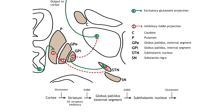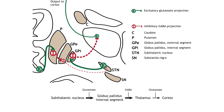The indirect pathway is activated by an increase in excitatory cortical input, activating the inhibitory striatum neurons. This leads to inhibition of the external segment of the globus pallidus neurons, resulting in disinhibition of the excitatory neurons in the subthalamic nucleus. This excitatory output from the subthalamic nucleus to the internal segment of the globus pallidus increases inhibition of the thalamus, leading to decreased thalamic output to the cortex.